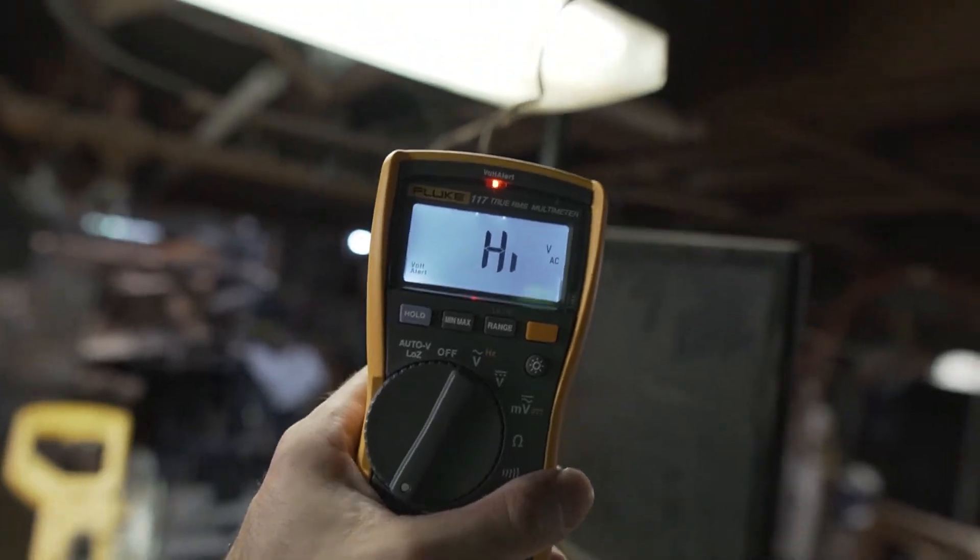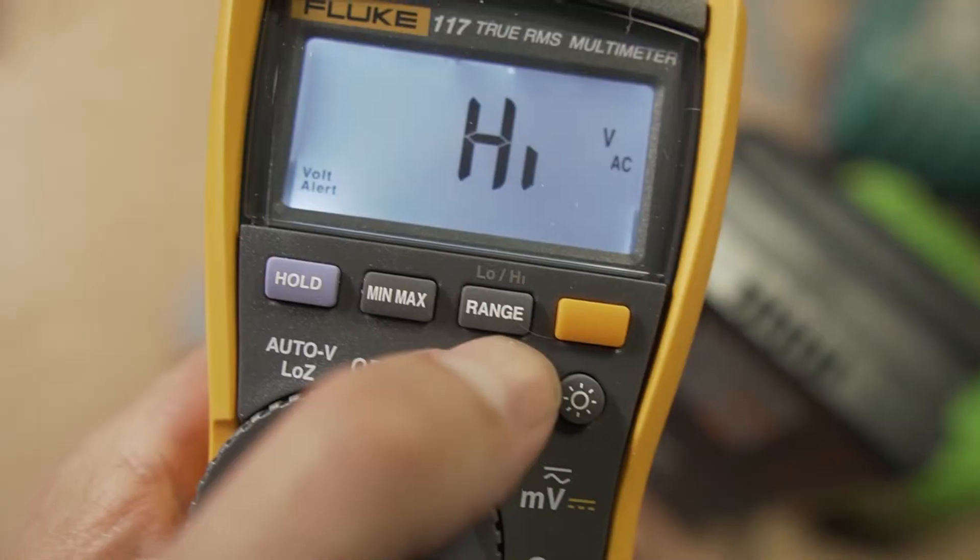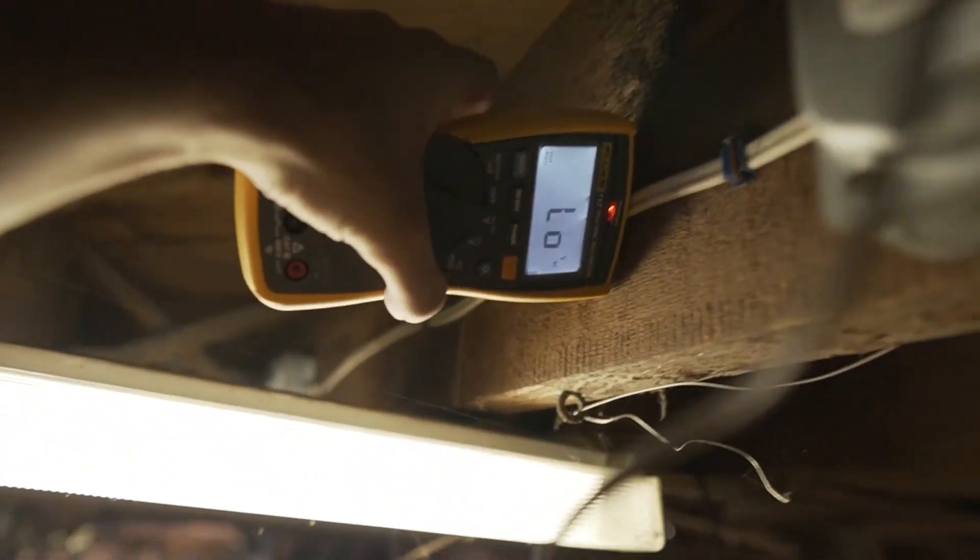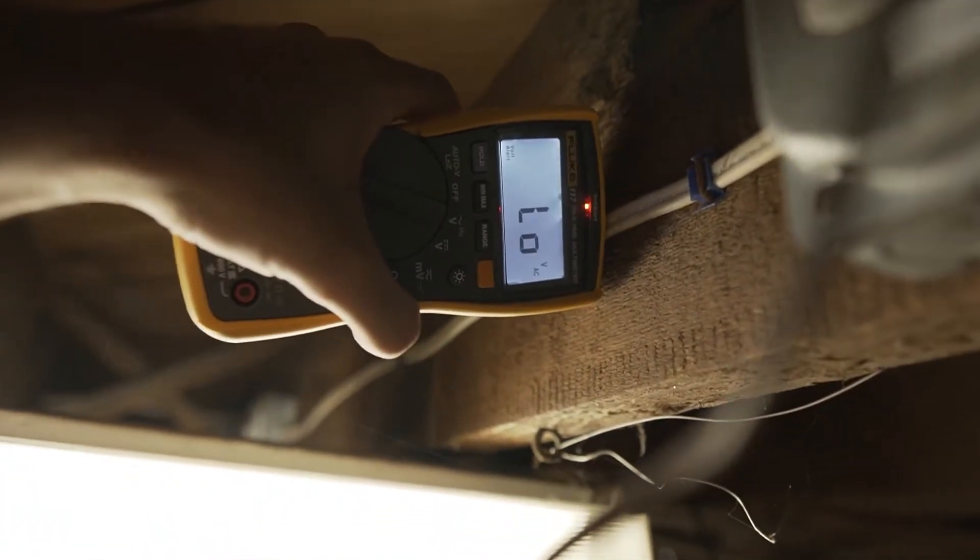And it's got two modes. So there's a high sensitivity mode, or you can press this button right here and go into low sensitivity mode. And it can detect voltage.